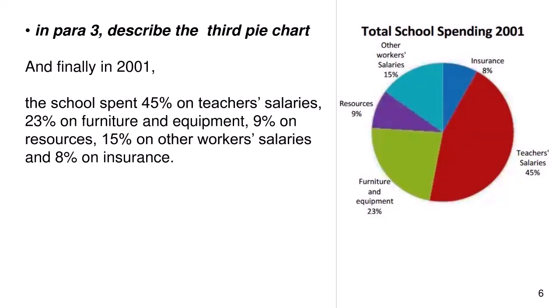In para 3, describe the third pie chart. And finally, in 2001, the school spent 45% on teachers' salaries, 23% on furniture and equipment, 9% on resources, 15% on other workers' salaries and 8% on insurance.